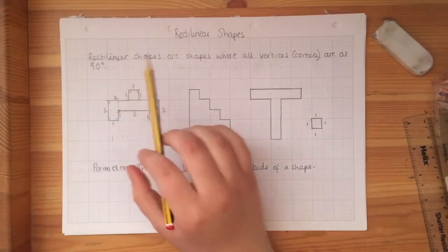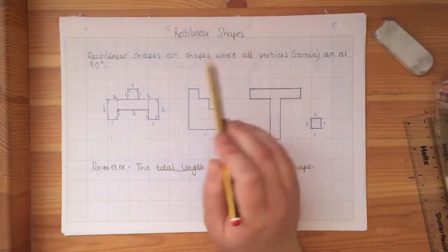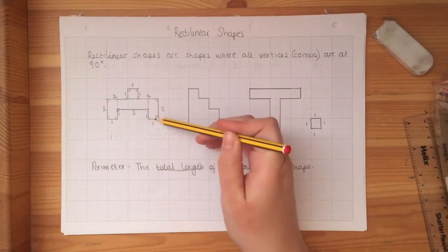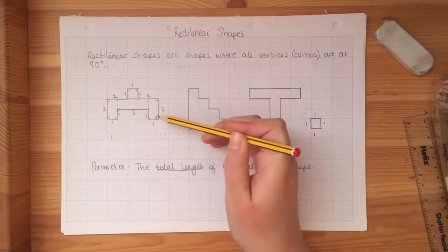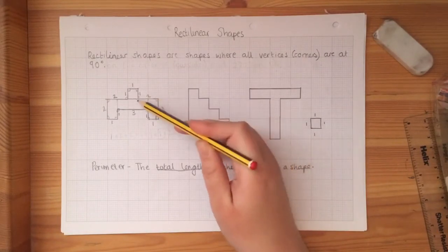Rectilinear shapes are shapes where all the vertices, so all the corners, are at 90 degrees or a right angle. You can see here, I've drawn in the corners, they've all got this little square. That means that they are all 90 degrees.